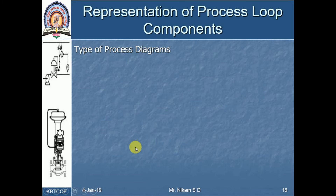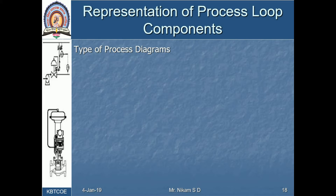As we are having processes, to understand those processes we must have some diagram so that we can analyze the process just sitting inside a room. There must be some documentation for process industry — every process industry. Maintenance people, erection people, even the higher authorities require some documentation so that they can understand the process or understand the plan. So for that purpose, we are having different types of process diagrams.